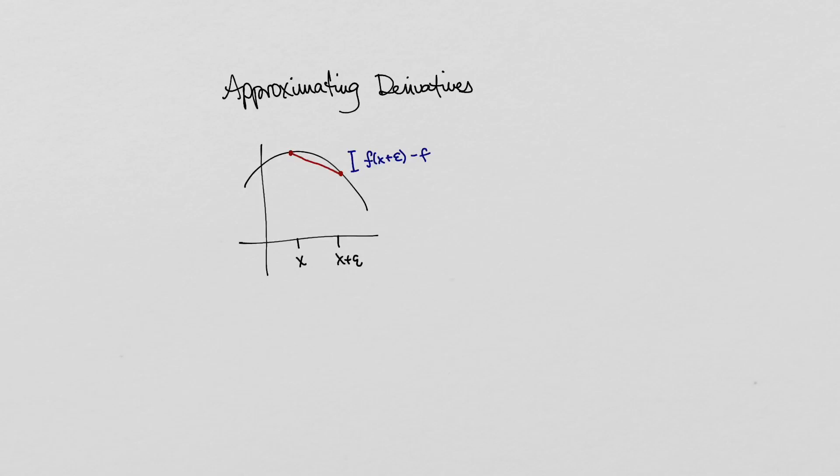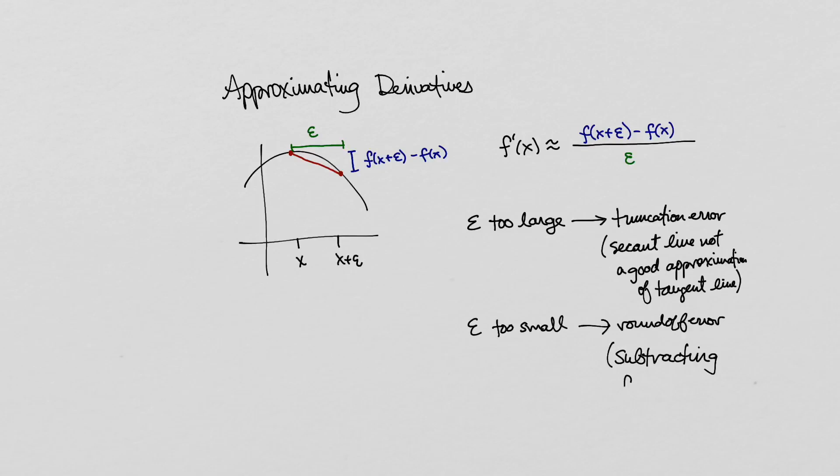Approximating derivatives using difference quotients is typically unstable because the subtraction step is ill-conditioned. We will typically lose at least half our digits of precision every time we approximate a derivative using difference quotients. Fortunately, there is a way to compute derivatives which is both stable and fast. Essentially, the idea is to keep track of the function value and the derivative value as we go through the calculations performed internally by the function.